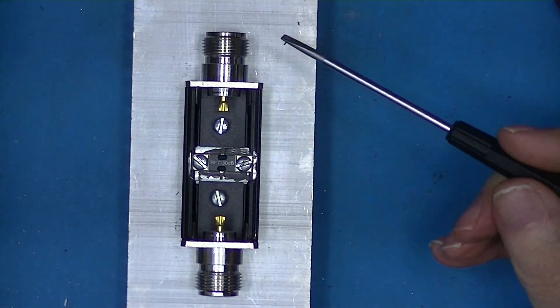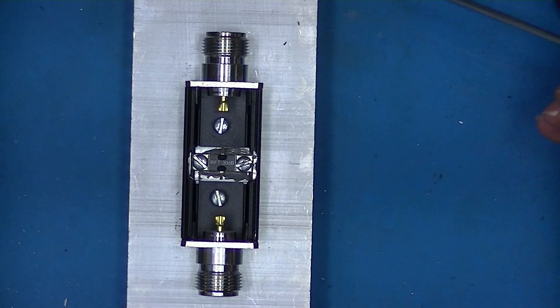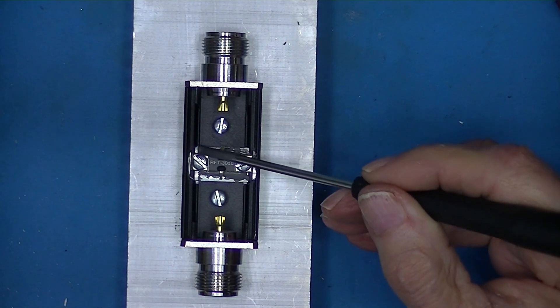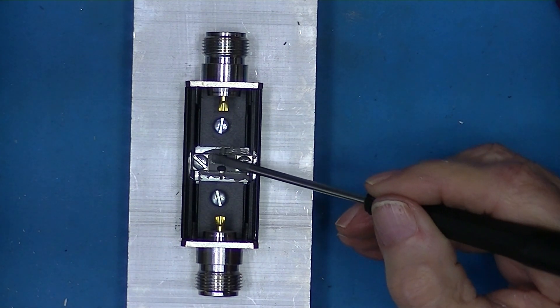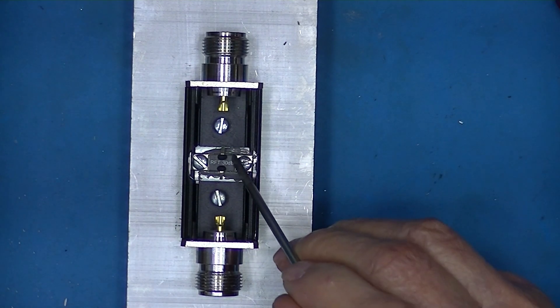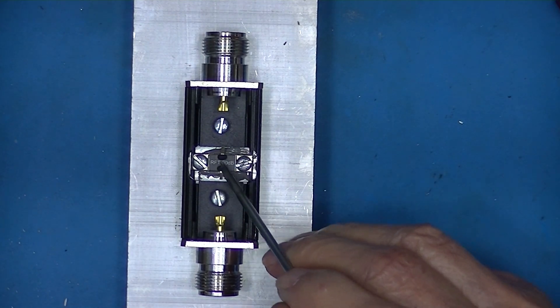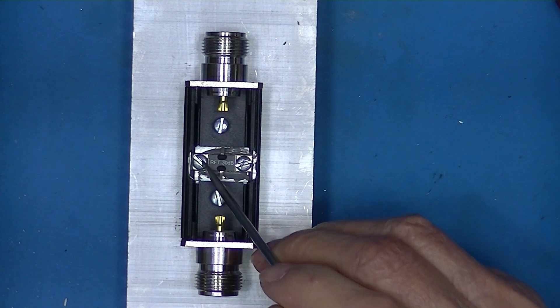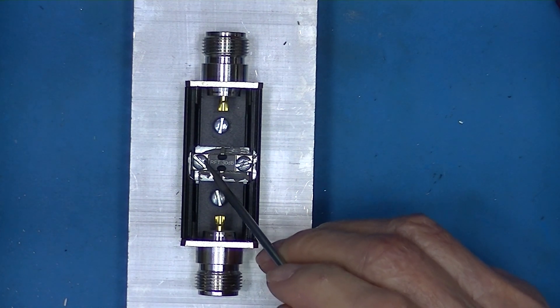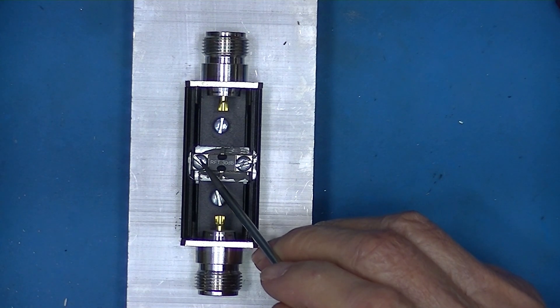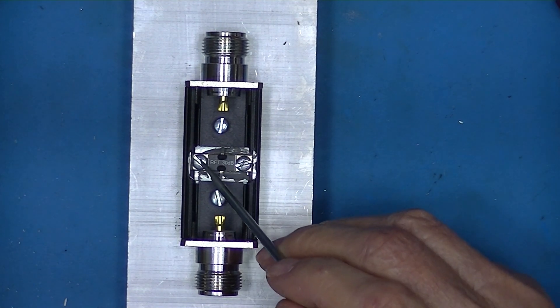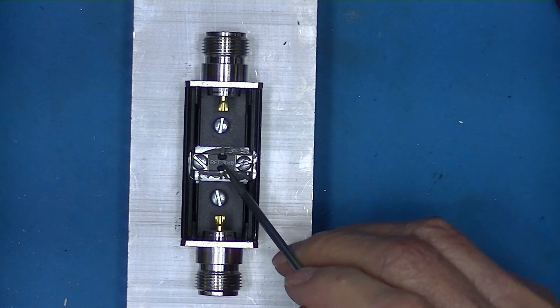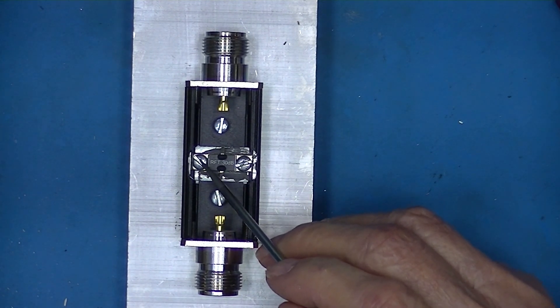I'm using 4-40 imperial thread screws with conventional cross slot heads and they just clear the attenuator. I'm not sure if number 3s or M3s would be better, but probably M2 and a half would work fine. And if I were going to use M2 and a half, I would use hex head cap screws.